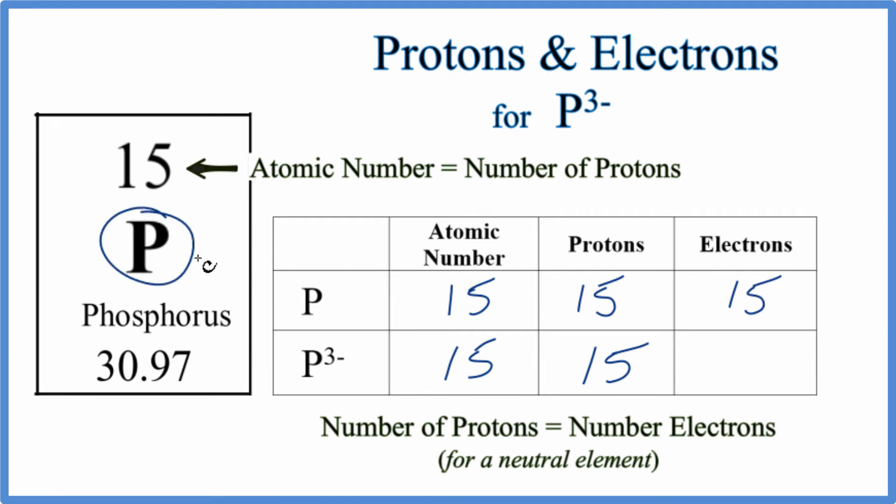Think of it this way for the P3 minus, that 3 means we have three extra negative charges. Electrons are negative, so we have three more electrons. So 15 plus 3, that gives us 18. So we have 18 electrons for the P3 minus ion.